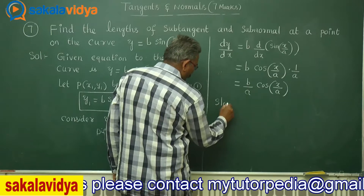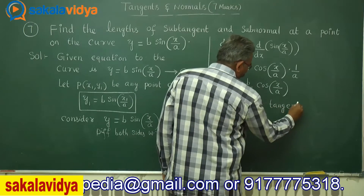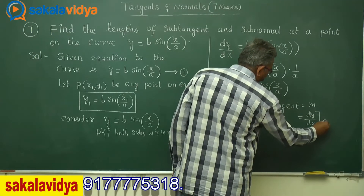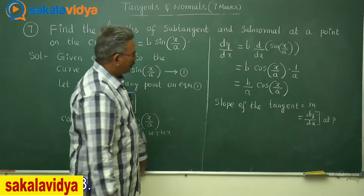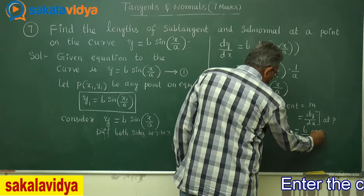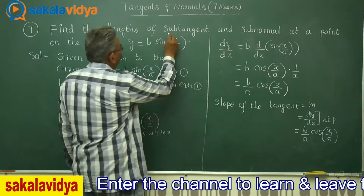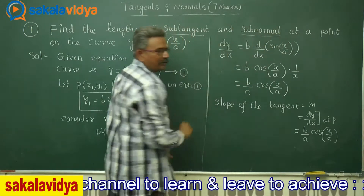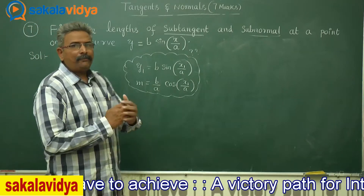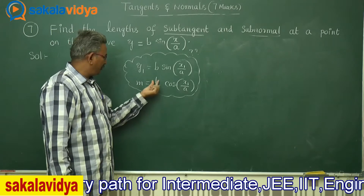The slope of the tangent is given by m = dy/dx at point P(x₁, y₁). Substituting x₁ in place of x, we get m = (b/a)·cos(x₁/a). So now with y₁ = b·sin(x₁/a) and slope m = (b/a)·cos(x₁/a), we can find the length of the subtangent and the subnormal.